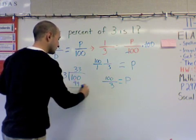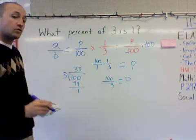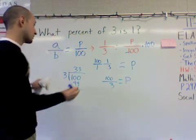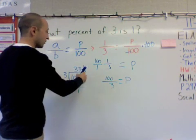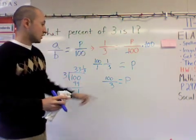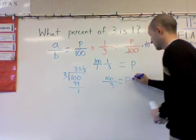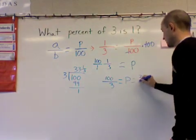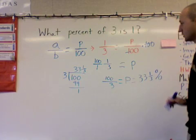99. We do the subtraction. It's 1. 3 won't go into 1, so we'll leave the remainder in the form of a fraction, 1 over 3. You get 33 and a third. So what percent of 3 is 1? We know that our percent now is equal to 33 and 1 third percent.